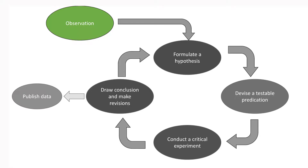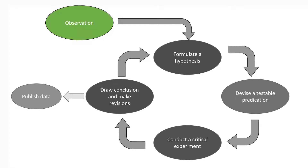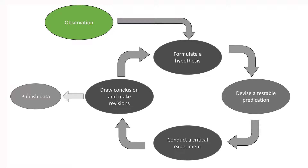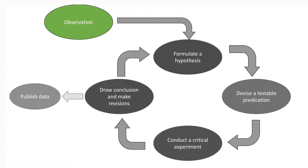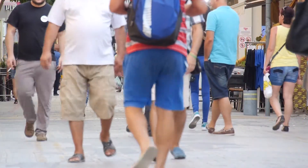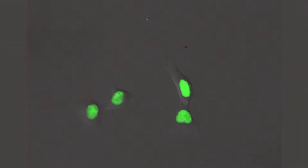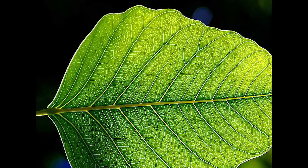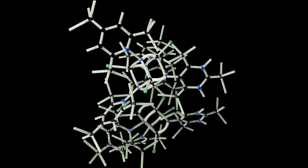The first step of the scientific method is observation, and observation can come through different ways. It depends on the field. We can observe animal behavior, human behavior, cells in the microscope, plants, planets, atoms, and so on. So we have different areas of science, and each area has its own way of observing.